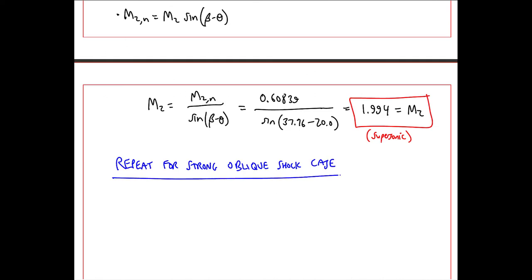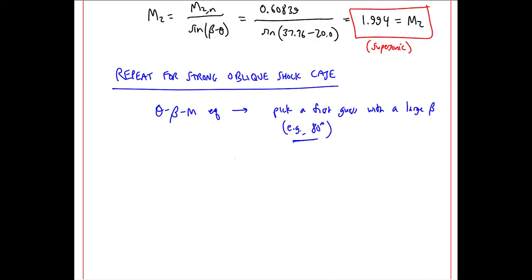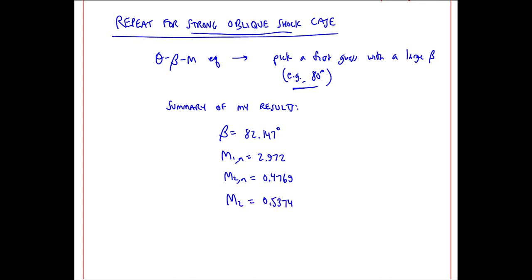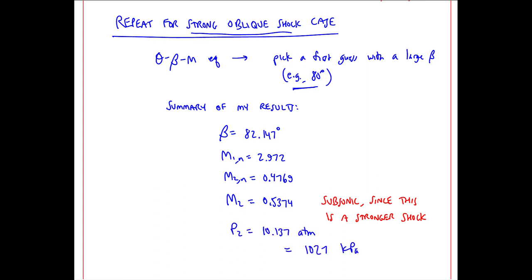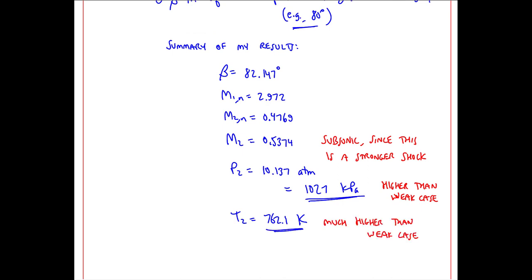Now we'll repeat for the strong oblique shock case. When solving the theta-beta-M equation iteratively, pick initial guesses with a large beta — for example, 80 degrees — to ensure you get the strong case. Here's a summary of results for the strong oblique shock: beta, M1N, M2N, and M2 — note that M2 is subsonic, since this is a stronger shock. P2 turns out to be 1,027 kPa, or 10.14 atmospheres, much higher than the weak case. T2 is also much higher than the weak case.